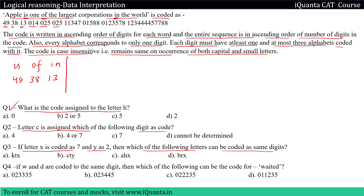After that we have three-digit numbers: 014, 025, 025. And in the sentence, we have the three-letter words: 'one', 'the', and 'the', which are words having three alphabets.